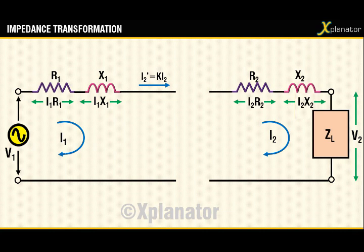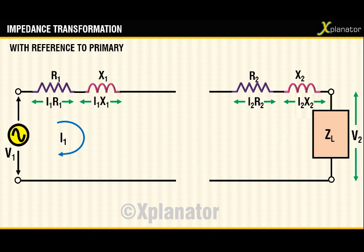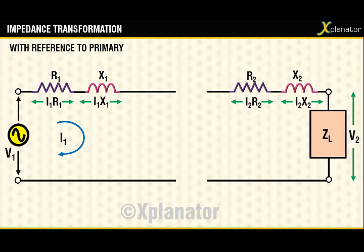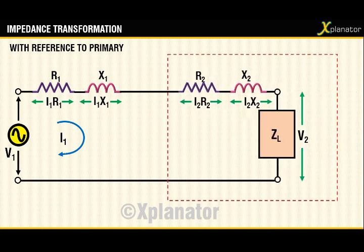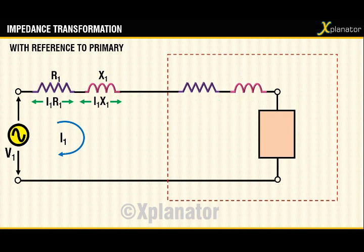One load impedance and one power supply. If impedance is to be transferred with reference to primary, then only primary current will be considered — so neglect all other currents. The values of terms in the secondary circuit will change: the new value of resistance r2 dash, reactance x2 dash, and load impedance zL will all be divided by k². The voltage drops will change accordingly.